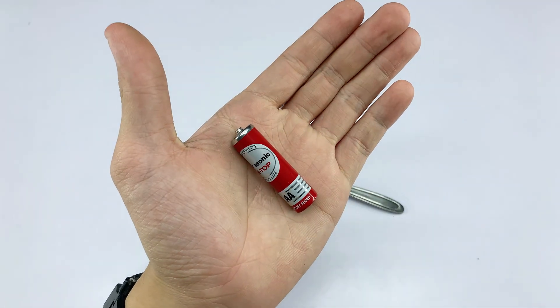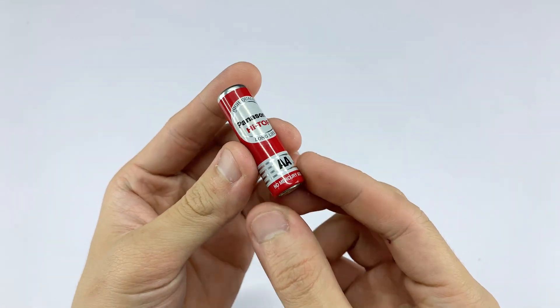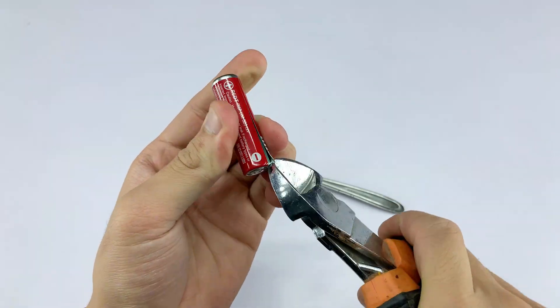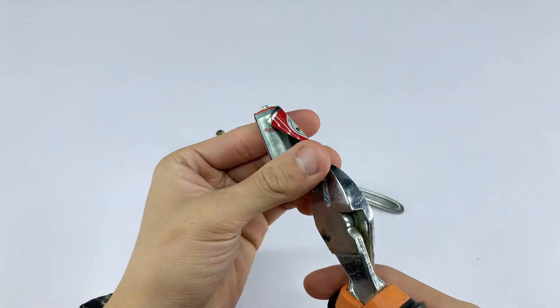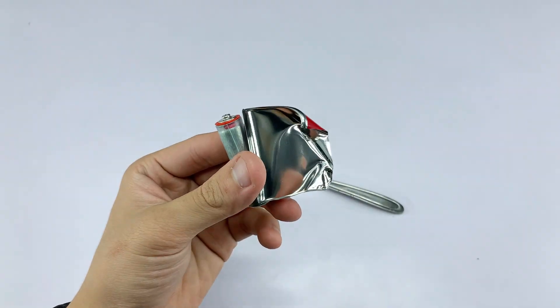Now for another component, an old AA battery. This battery holds a secret ingredient for our project. I'm carefully removing the outer metal casing from the battery using pliers. I'm doing this to extract the carbon rod from the center. This rod is an excellent conductor and will be our heating element.